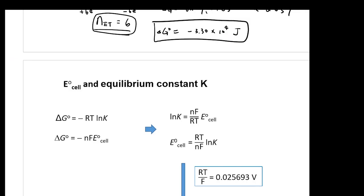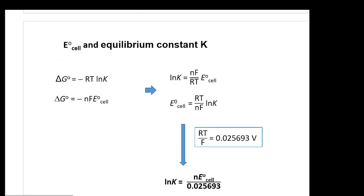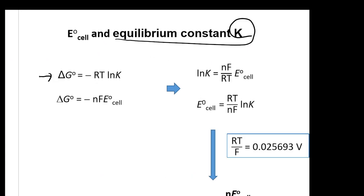So right now you know how to connect your delta G with your E cell. The next step is to connect with the equilibrium constant K. You can write your delta G° equals RT natural log K, right? So that's actually something that you learned from chapter 16.